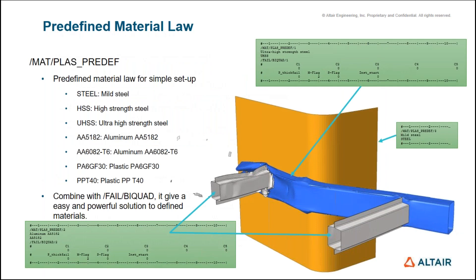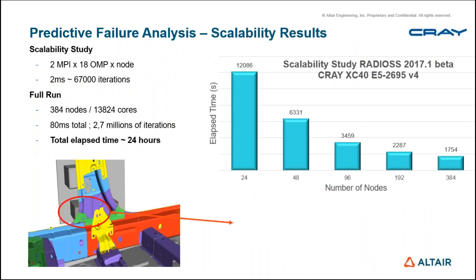A unique feature in Radioss is predefined material models. For users who don't understand all the material model parameters, predefined models are available — for example, selecting elasto-plastic with mild steel automatically provides required parameters. These predefined models are available for initial users who are just learning Radioss and want to run explicit simulations. Scalability and repeatability have been verified — cases using 138 to 4,000 cores for predictive failure analysis show significant time savings.